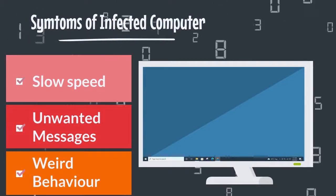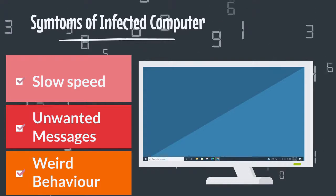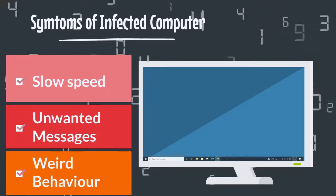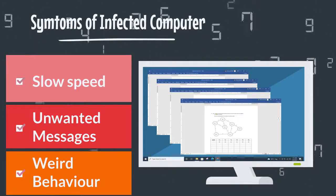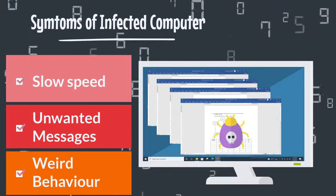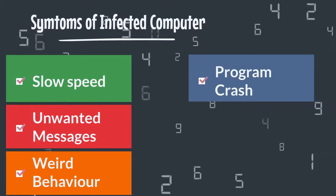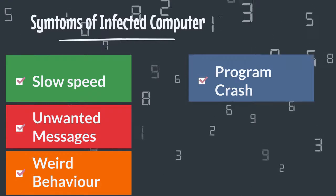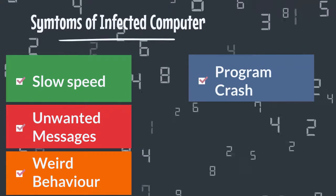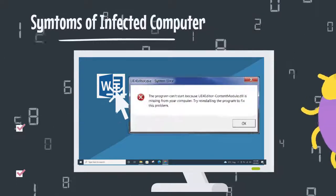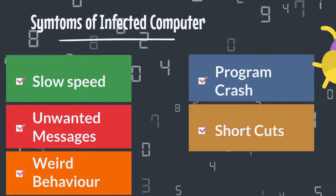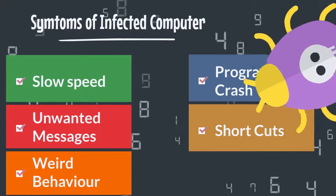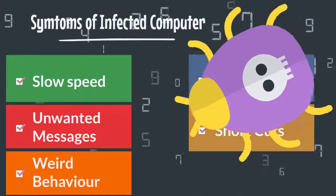Number three: strange behavior. A strange response of the computer is also a sign that it is infected with some malicious code. For example, if you run a program and your computer opens multiple copies of that program automatically without any reason, it shows that your computer has been attacked by malware. Another sign is that the user's computer program starts crashing or malfunctioning. Also, computer programs and applications may be converted into shortcuts while main files are hidden or deleted.